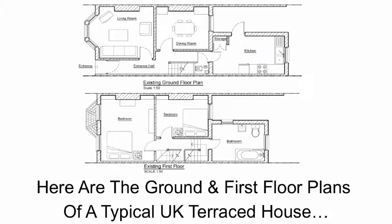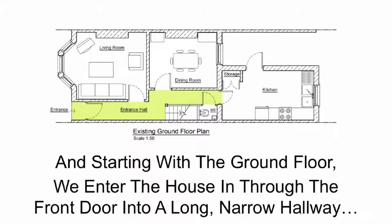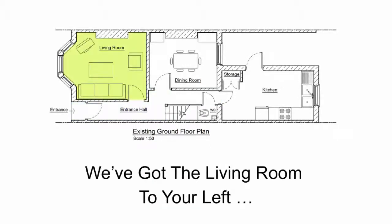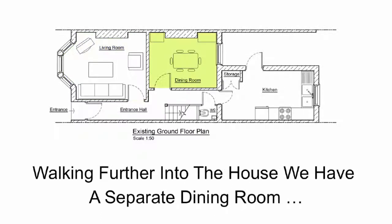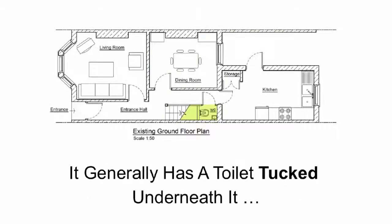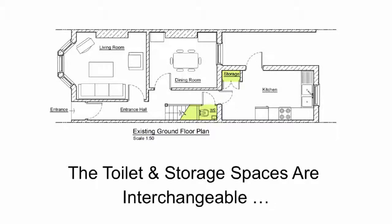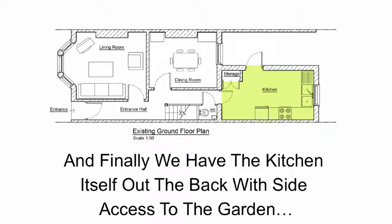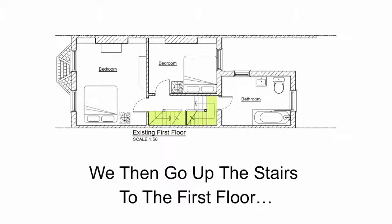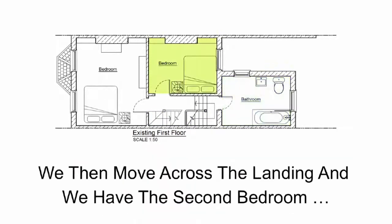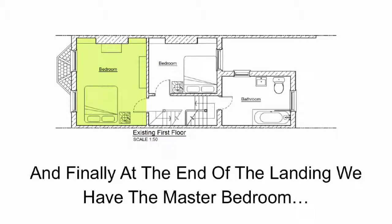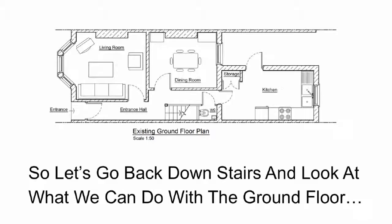Let's get started. Here are the ground and first floor plans of a typical UK terraced house. Starting with the ground floor, we enter the house through the front door into a long narrow hallway. You've got the living room to your left with a nice big bay window looking out the front. Walking further into the house we have a separate dining room with a rear window that looks out onto the garden. You have the stairs on the right that straddles the party wall and generally has a toilet tucked underneath it, then some storage space near the rear kitchen. And finally you have the kitchen itself out the back with side access to the garden. Going up to the first floor, across the top landing we have the main bathroom to the rear, then the second bedroom looking out onto the rear garden, and finally the master bedroom at the end of the landing.